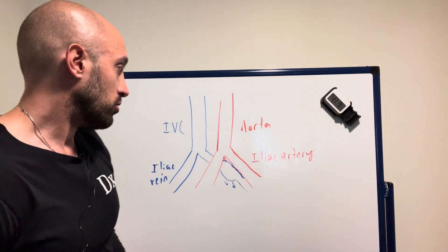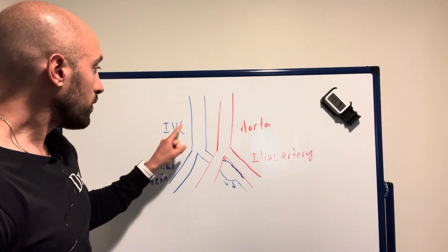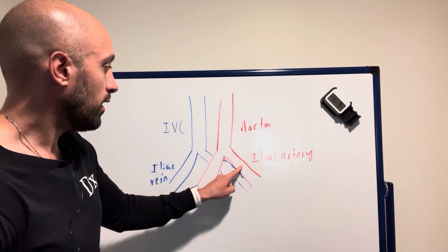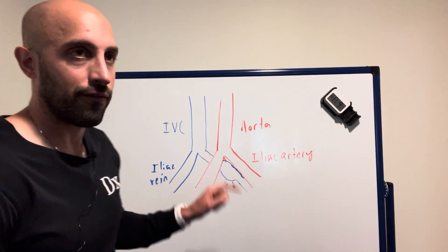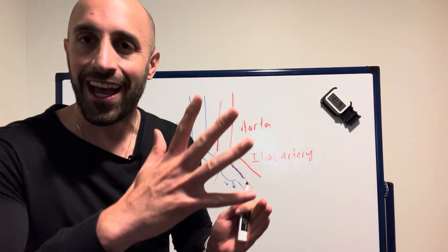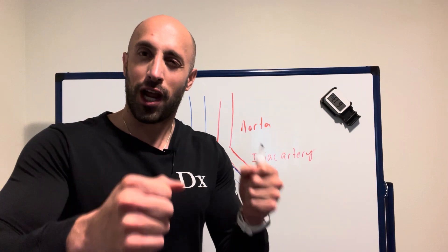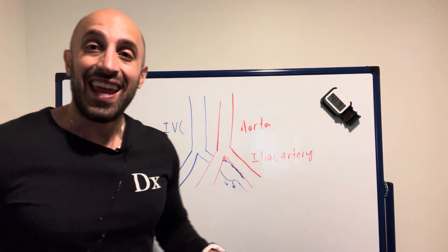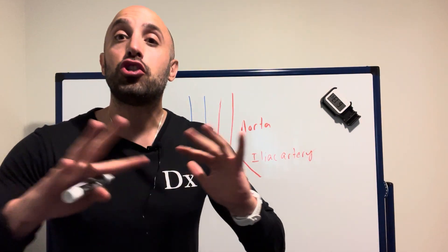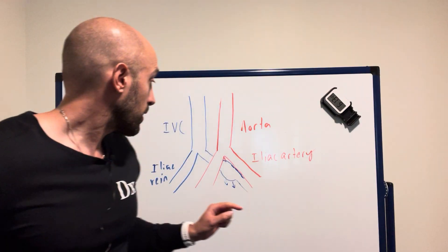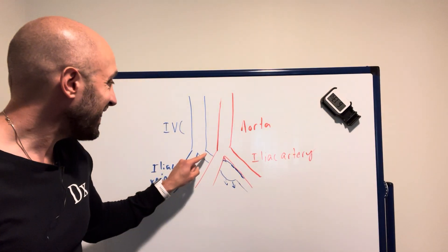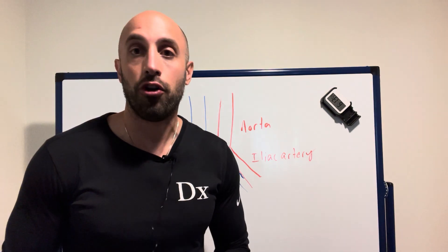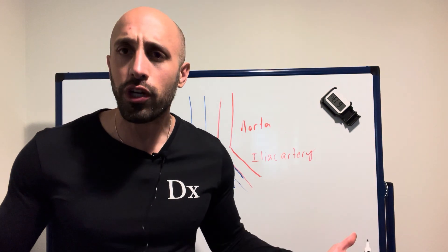Let's break down the vasculature. We have the IVC, the abdominal aorta, the iliac artery, the iliac veins. Remember 'van' — like driving a van from medial to lateral: vein, then artery. In the majority of us, this left iliac vein goes under the right iliac artery.